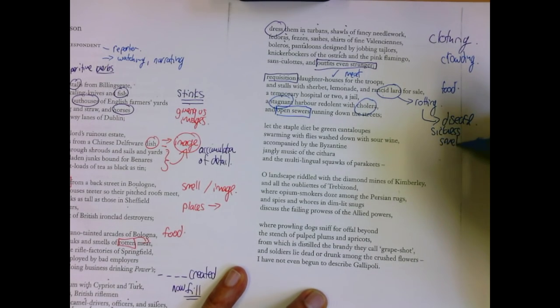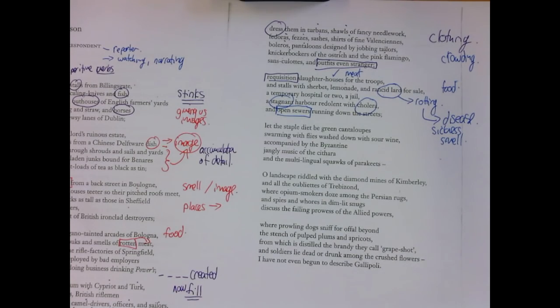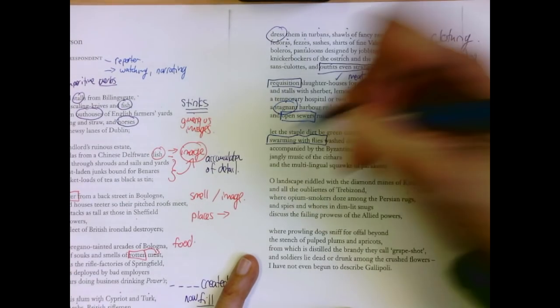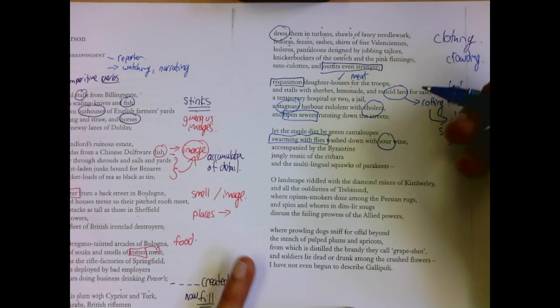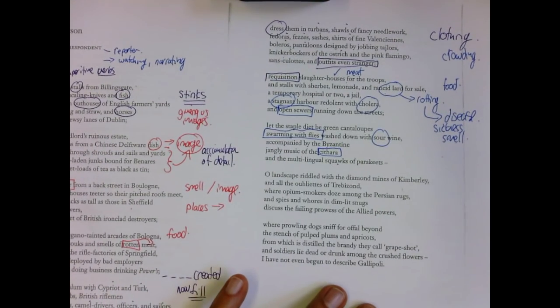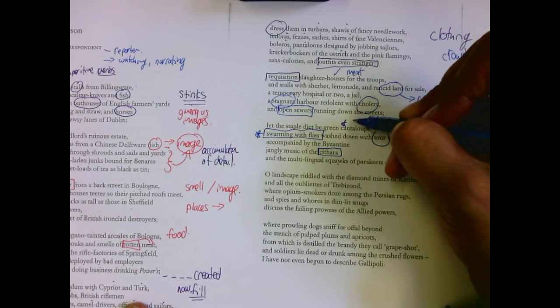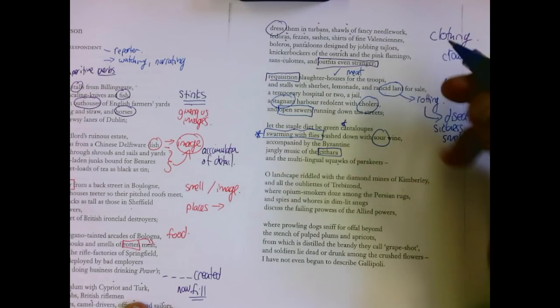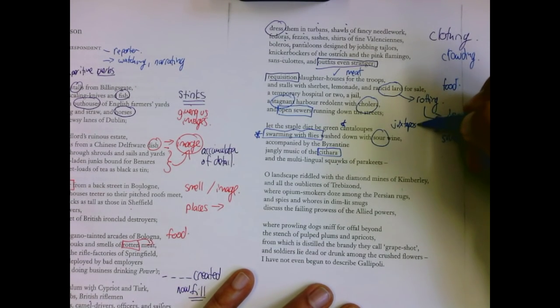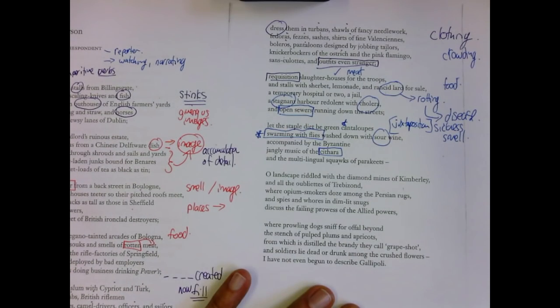Sickness, smell. Whatever fun you might have in the sounds of this poem or in the accumulated details, now we're definitively in an open sewer. It is hell. Let the staple diet be green cantaloupe swarming with flies, washed down with sour wine, squawks of parakeets. The music of a kithra, which is, I like the sound, but it can be very disconcerting. So we have cantaloupes, beautiful green cantaloupes, but immediately the juxtaposition with them swarming with flies. That's all you get to eat here.